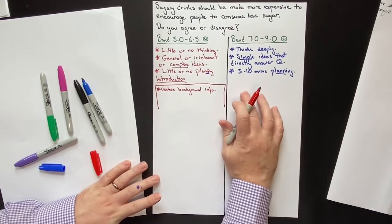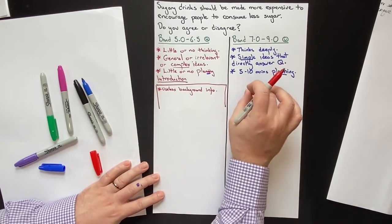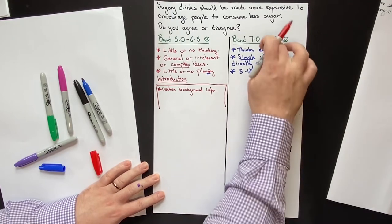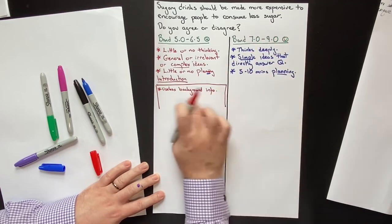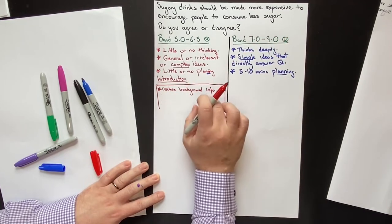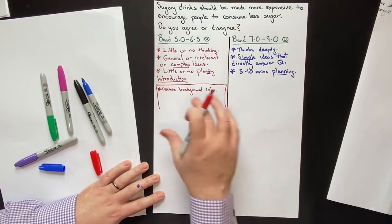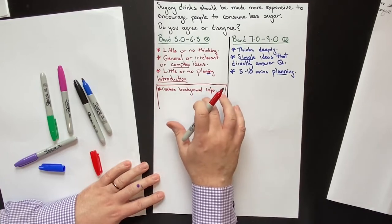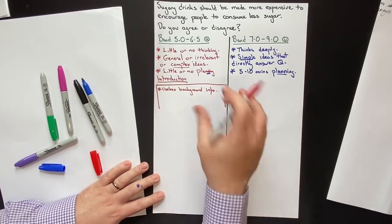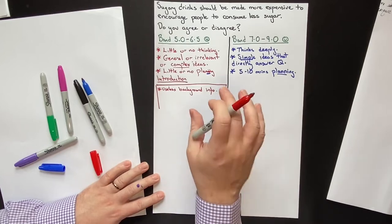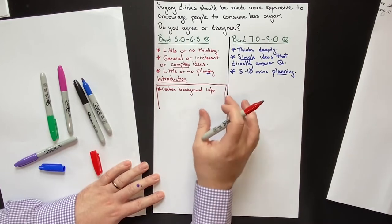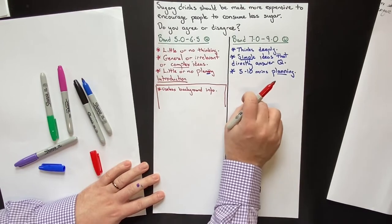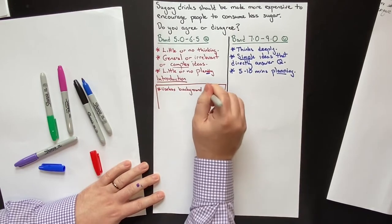If you contrast that with the Band 7-to-9 student, every single letter, every single word, every single sentence contributes to getting that high score. The low-scoring student has just memorized these phrases, or they've read so-called Band 9 essays that aren't really Band 9, and this leads to just memorizing stuff and inserting it into their essay. The IELTS Writing Task 2 test is not a memorization test — it is testing your ability to clearly communicate in writing.